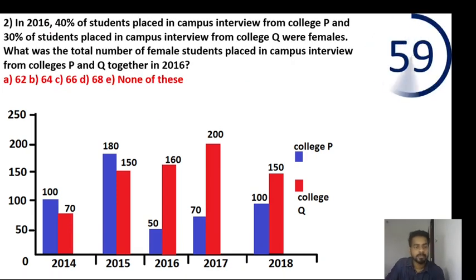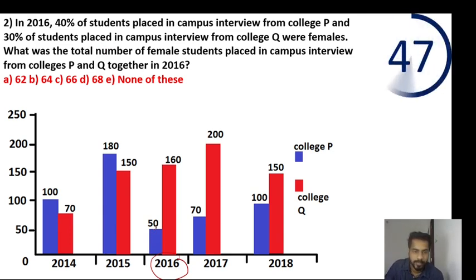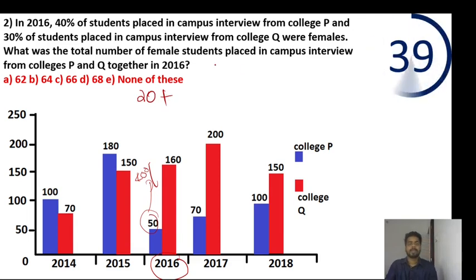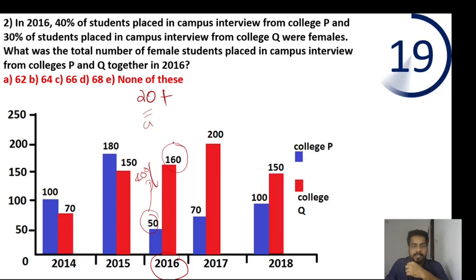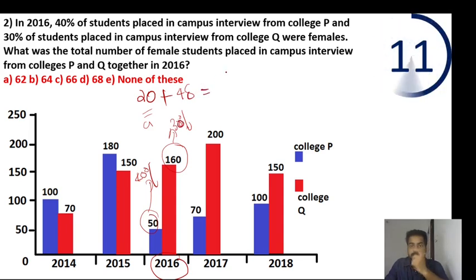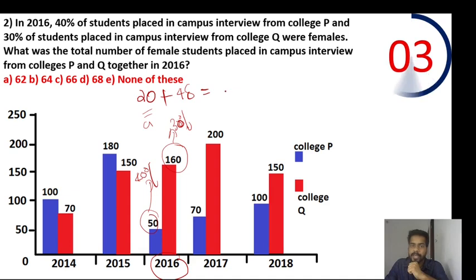Question: in 2016, 40% of students placed in campus interview are from P. And 30% of students placed in campus interview from Q were females. How many girls? 40 plus 48 girls. Total number of females in campus interview from college P and Q together — answer is 68.